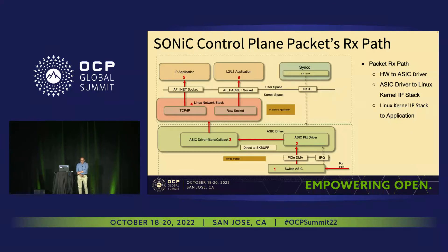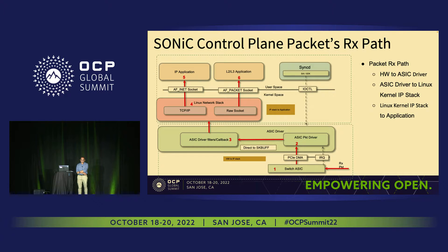Today we're going to talk about the Linux network stack and how we can optimize it further for some applications. On your screen you see a typical network block diagram in SONiC. You have the ASIC, then the kernel driver, then the network stack, the socket layer on top, and finally the SONiC applications.